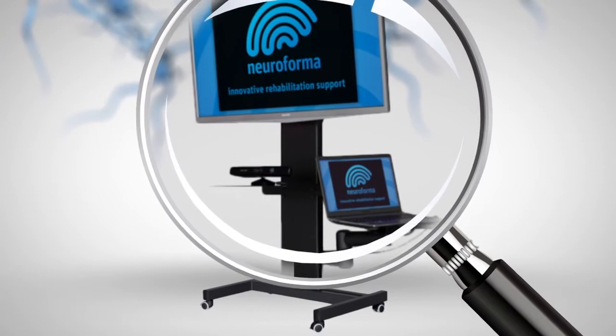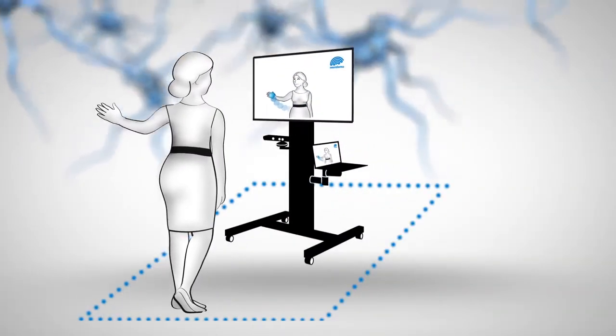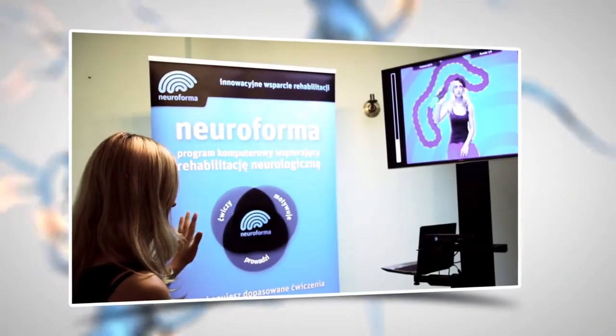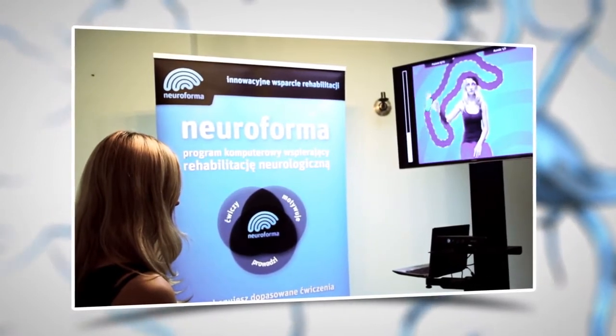The system only requires three square meters of space to do the exercises. How do you use Neuroforma? It's easy. Patients stand or sit in front of the screen where they see their mirror reflection.